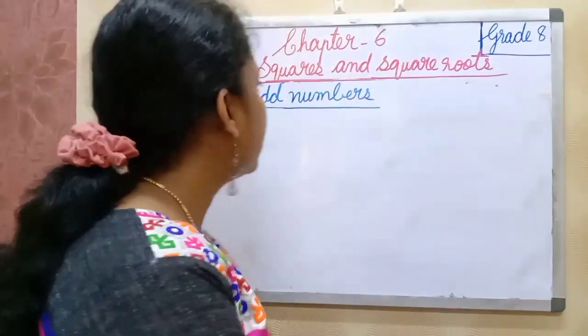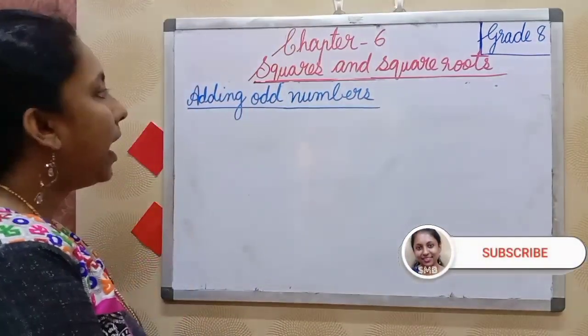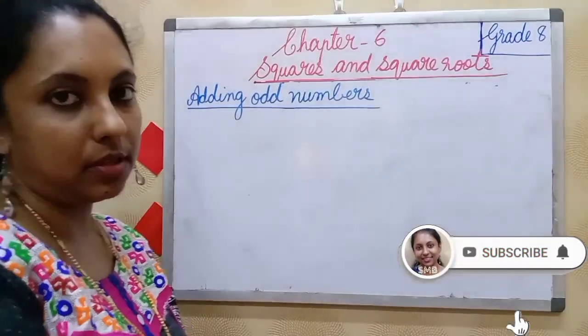Hello everyone, welcome to this Macbook lesson. We can continue our chapter, Squares and Square Numbers. In the previous class we discussed numbers between two perfect squares and did a few examples. Today we continue. Today's topic is adding odd numbers.